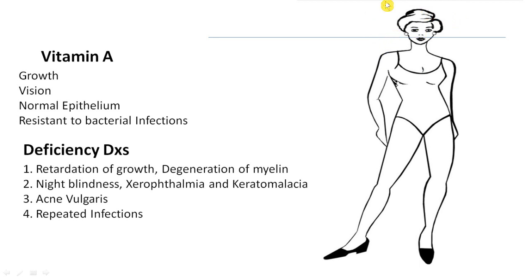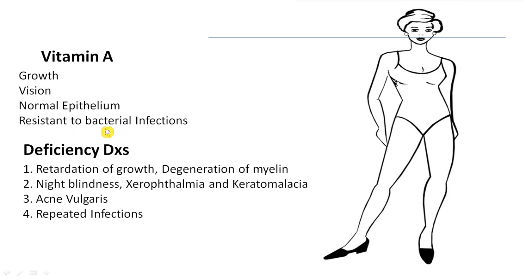For Vitamin A, starting from the top of the body: first, it is essential for growth — not just physical growth but also brain development. Second, it is essential for vision. Third, it helps in the maintenance of normal epithelium all over the body — its deficiency leads to acne vulgaris. Fourth, it helps in resistance to bacterial infection.